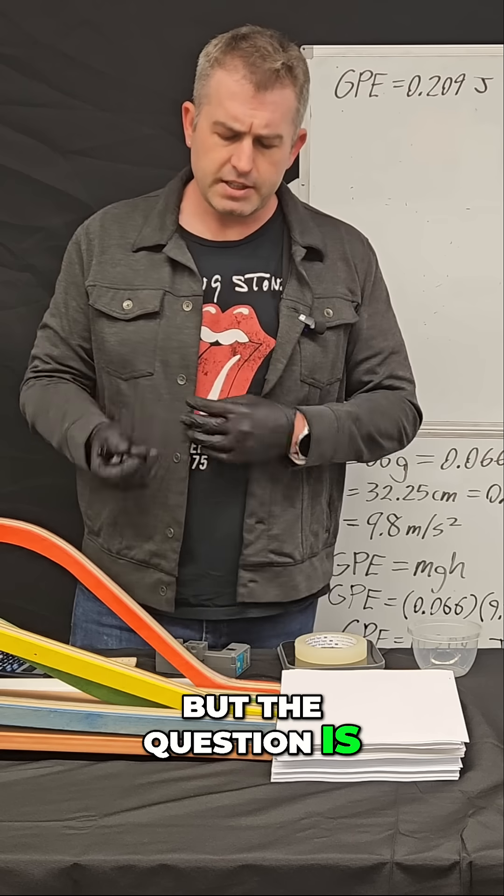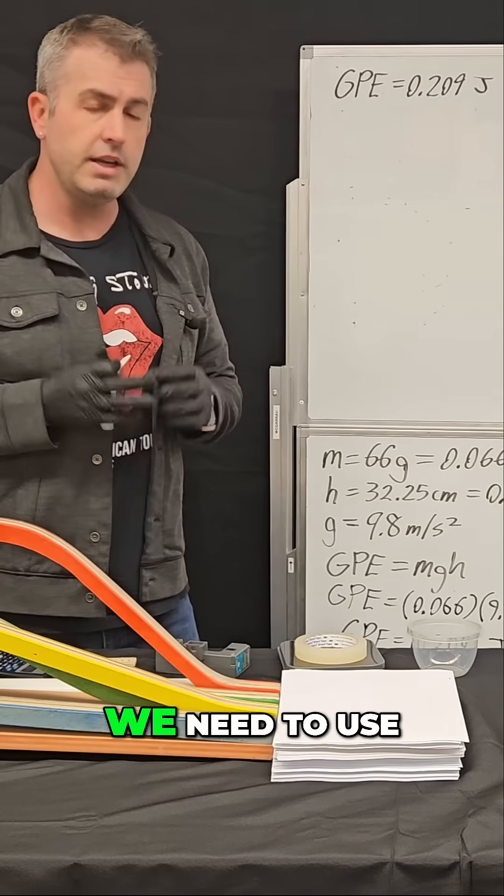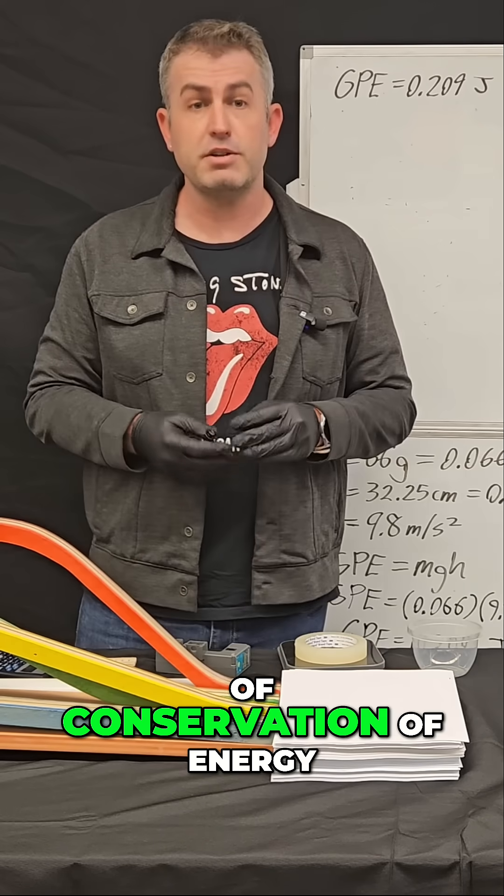But the question is, how can we figure out which one's faster at the bottom? We need to use something called the law of conservation of energy.